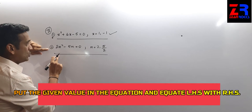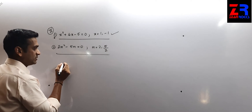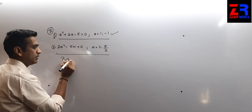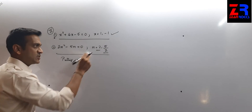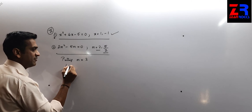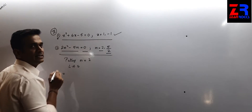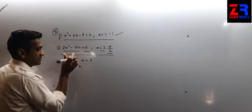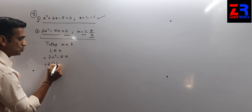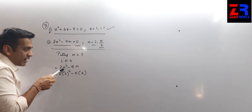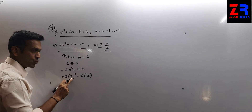Question 2: 2m² minus 5m = 0. The values of m are 2 and 5/2. First, putting m = 2. The left-hand side is 2m² minus 5m. Substituting: 2 into 2² minus 5 into 2 = 2 × 4 minus 10 = 8 minus 10 = minus 2.